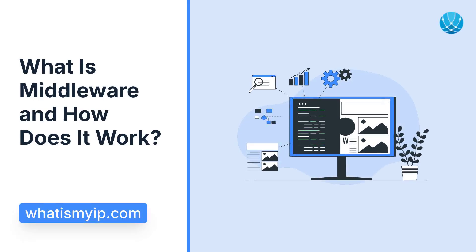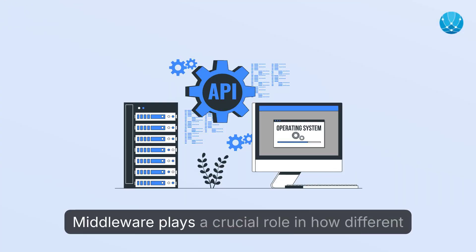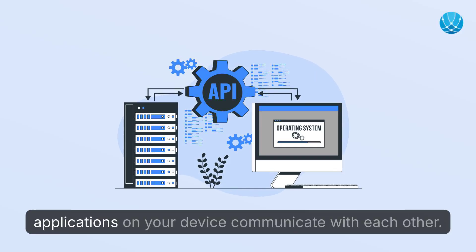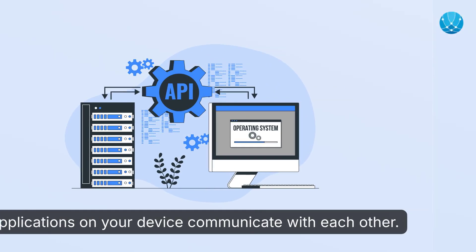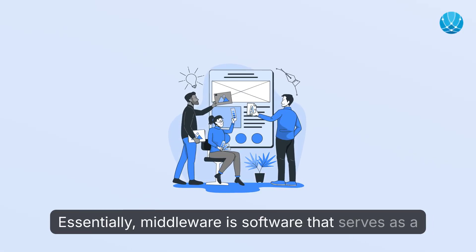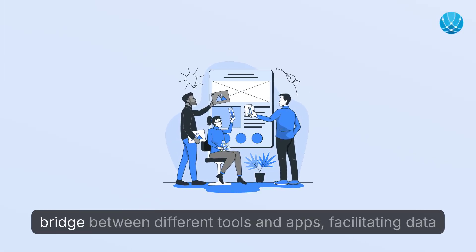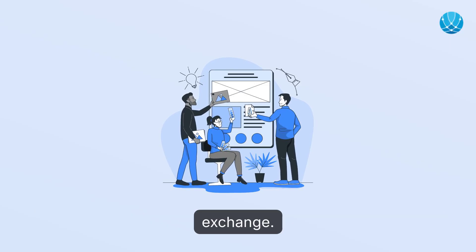What is middleware and how does it work? Middleware plays a crucial role in how different applications on your device communicate with each other. Essentially, middleware is software that serves as a bridge between different tools and apps, facilitating data exchange.